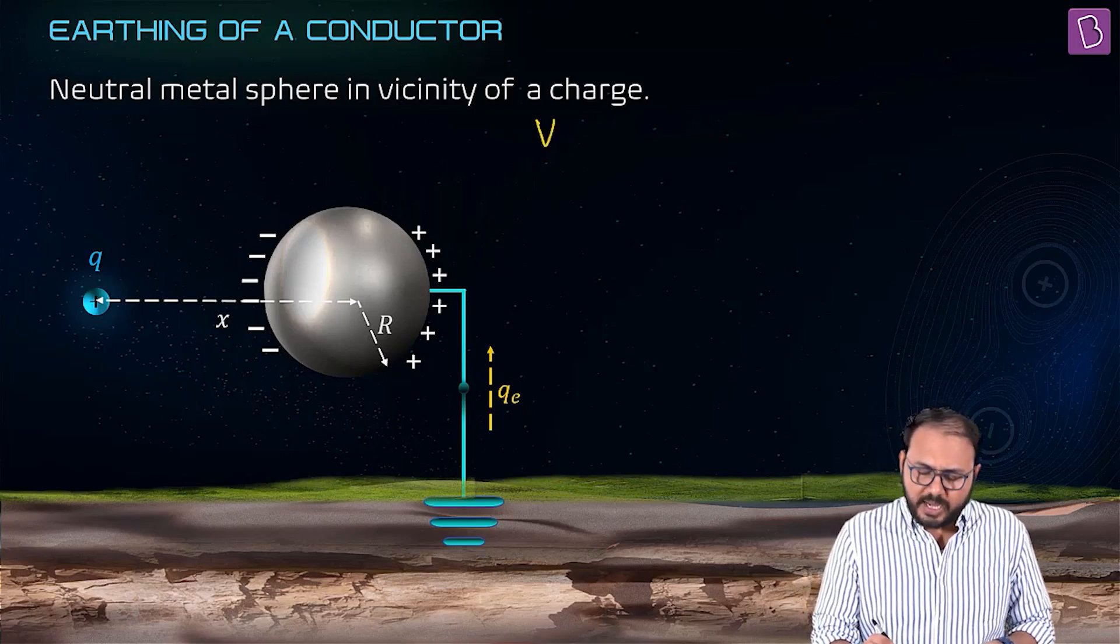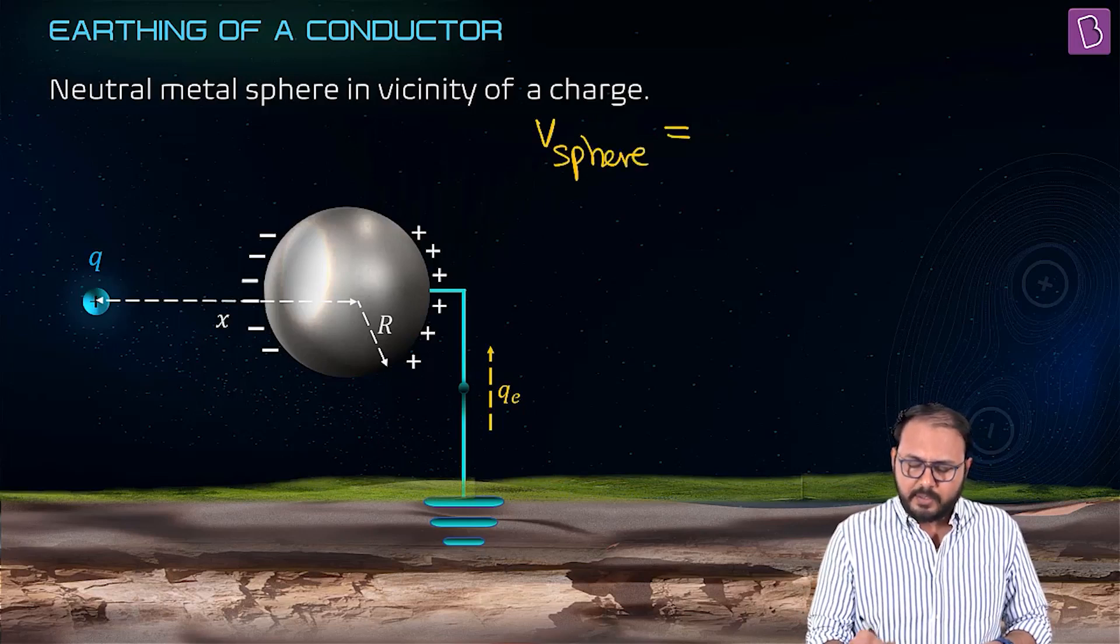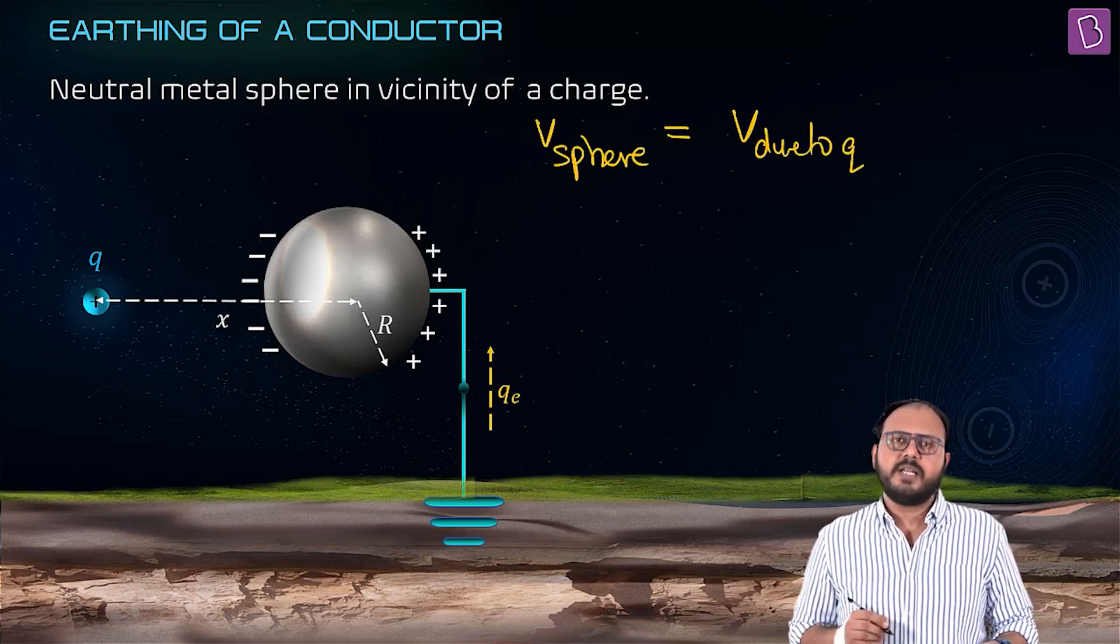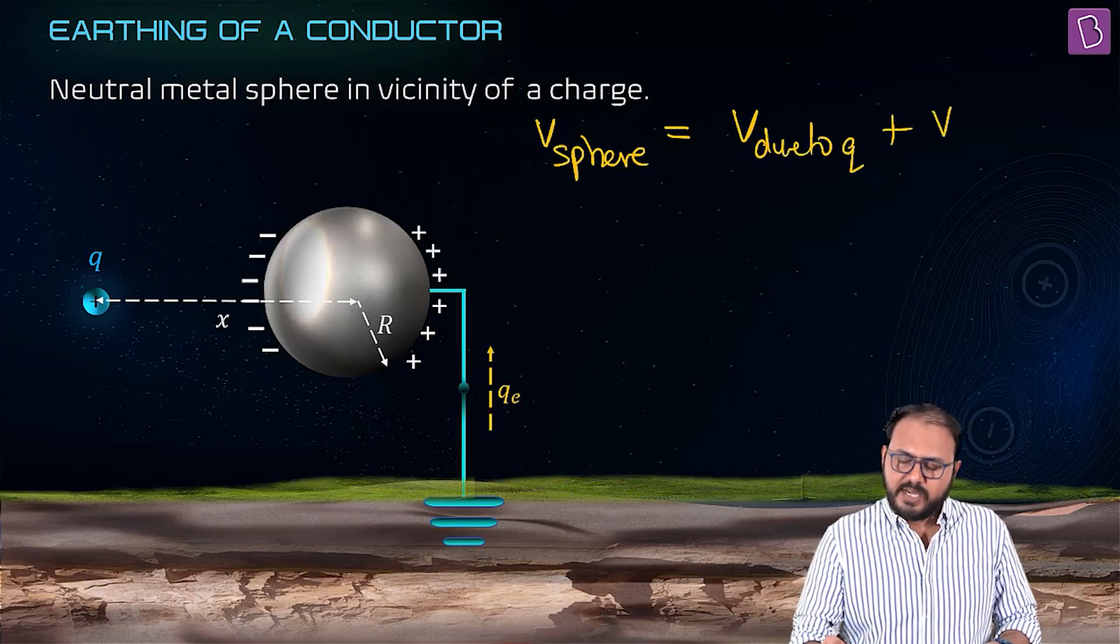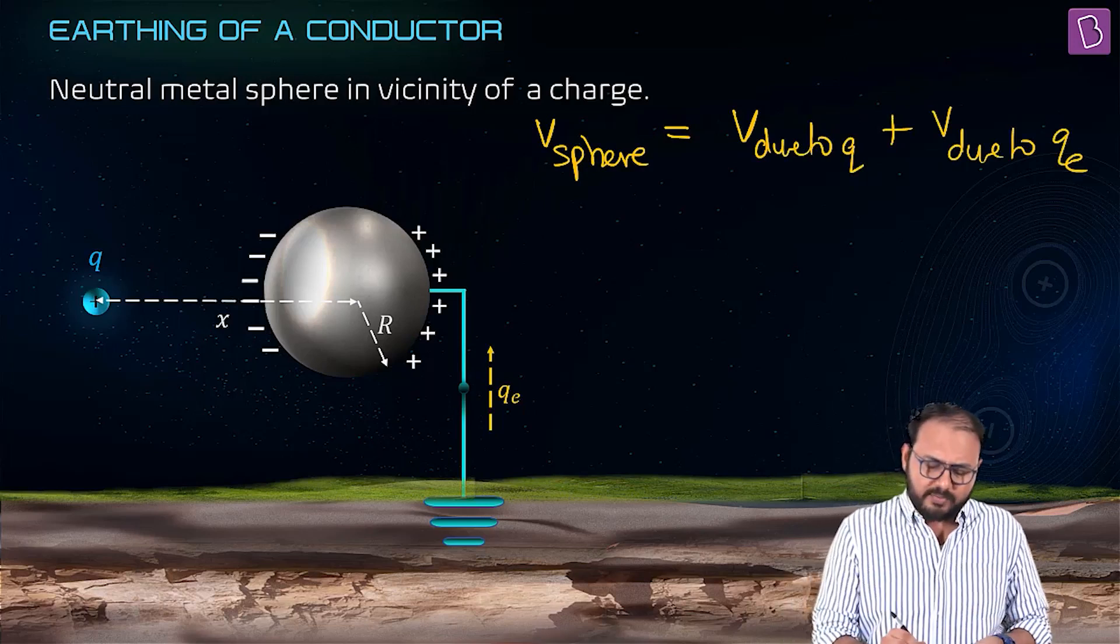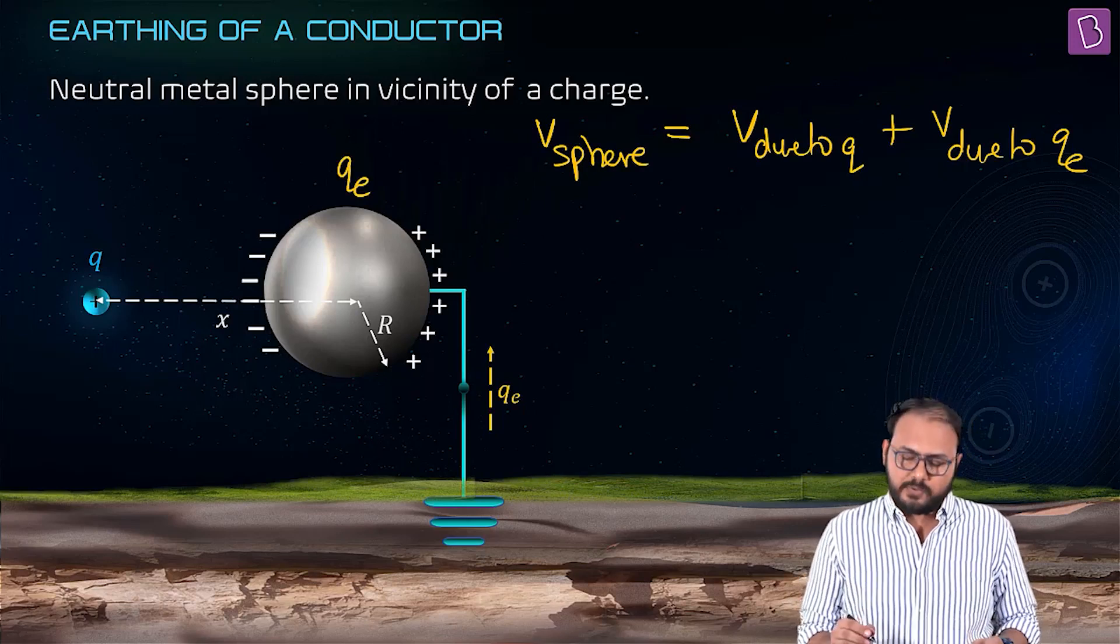Can you please tell me, if x is the distance between the center of the sphere and that Q, what is the total potential now? V sphere? V sphere is V due to Q in the vicinity, plus V due to - you are saying earth gave a qe. But why did the earth give qe? Hold on.